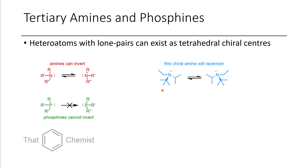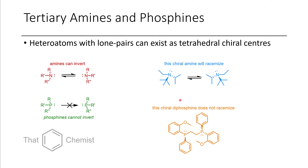For example, if you had an amine like ethyl isopropyl tert-butylamine, it would racemize between the two different enantiomers rapidly. However, if you take a chiral phosphine such as this chiral diphosphine, it only exists as one enantiomer when pure and won't isomerize under standard conditions.